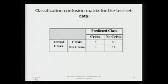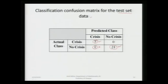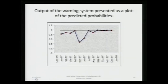On the test set data, the results show 21 no-crisis points correctly classified as no-crisis, 7 crisis points correctly classified as crisis, and only 1 crisis point misclassified as a no-crisis point — demonstrating that this ANN formulation does a good job for this two-class currency crisis identification problem.